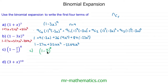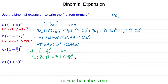Now for question c, n is equal to 8. Our first term is 8 choice 0 of 1 to the power of 8, multiplied by (negative x over 2) to the 0. Our second term: 8 choice 1 of 1 to the 7, multiplied by (negative x over 2) to the 1. Our third term: 8 choice 2 of 1 to the 6, and then (negative x over 2) squared. Our fourth term: 8 choice 3 of 1 to the 5, and then (negative x over 2) to the 3.